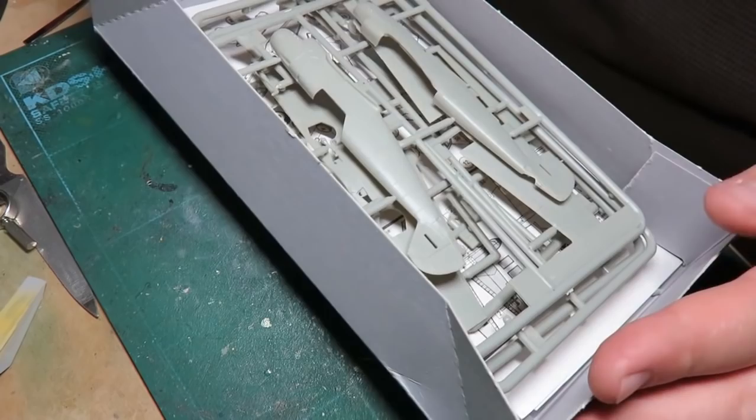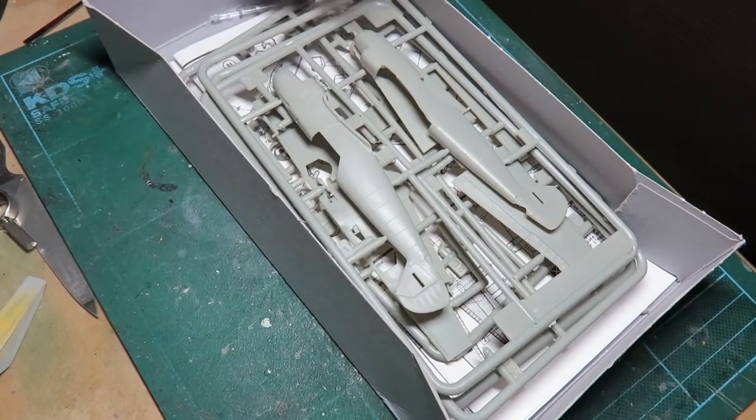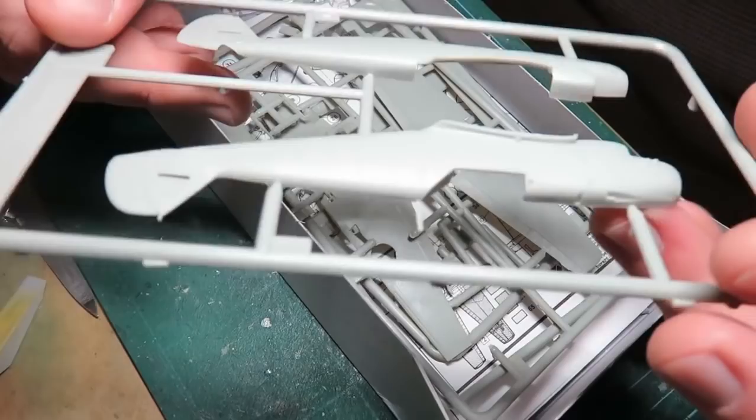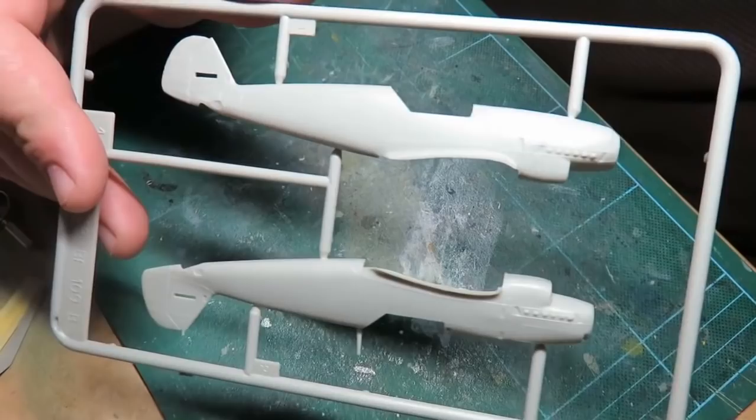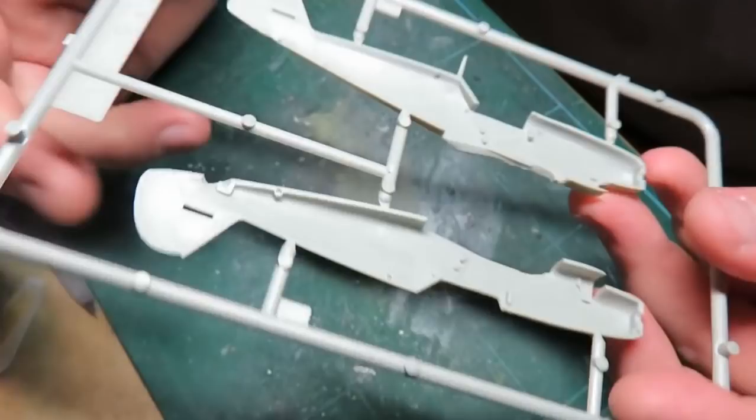So let's take a look at the sprues shall we? So here we have the first sprue of the fuselage. It's all raised detail. It's a bit unfortunate because you guys know me I like to do panel line washes and I won't really be able to do that with this one. But this has some really nice interior detail in it there.